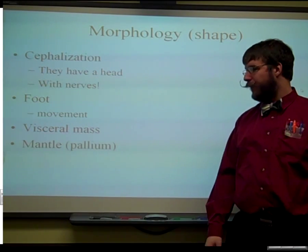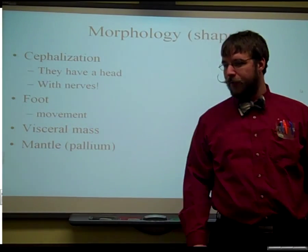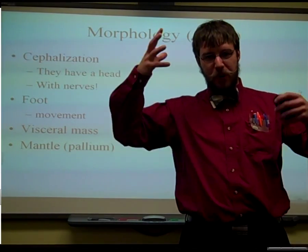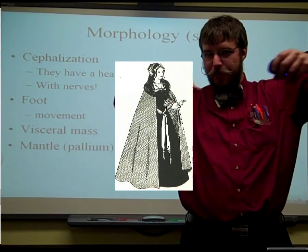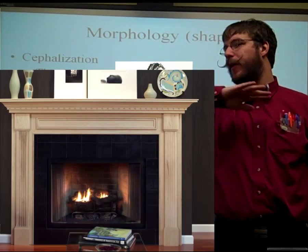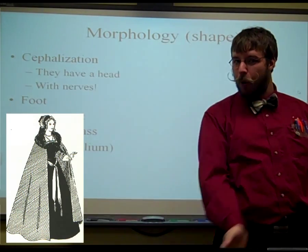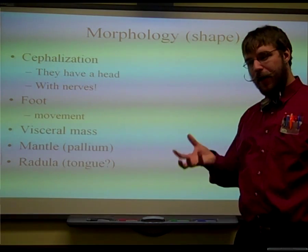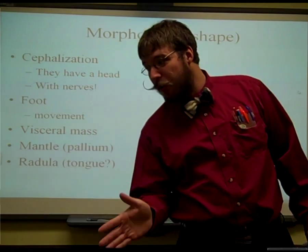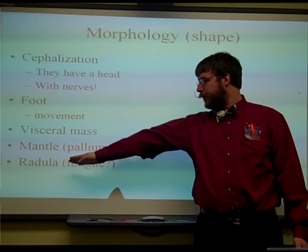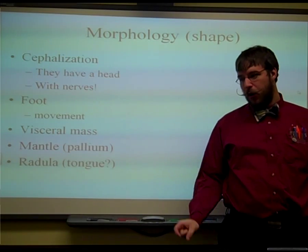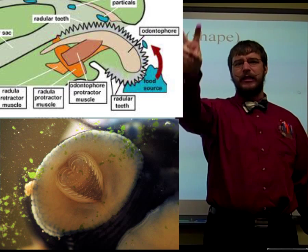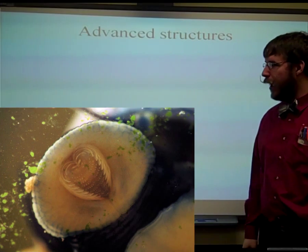Molluscs also tend to have a visceral mass, which is just this inner lining of tissues. They have a mantle, also known as a pallium — it's like a protective cape that you throw on against the cold weather outside, a thicker area that protects them. Probably the coolest feature about all the molluscs is they have what's called a radula, which is a tongue with teeth all over it. Textbooks usually describe it as rasping, which is kind of gross.